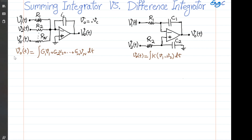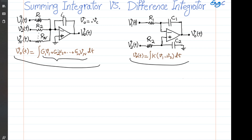A summing integrator on the left side versus a difference integrator on the right side is shown. We want to analyze why the output, as shown in this formula, is the integration of the linear combination of the n-input independent voltages V1, V2, V3, up to Vn with some gain G1, G2, up to Gn. And why on the right side, the circuit is just integration of some amplified version of the difference of the two voltages at the input, using just one ideal op-amp for each of them.